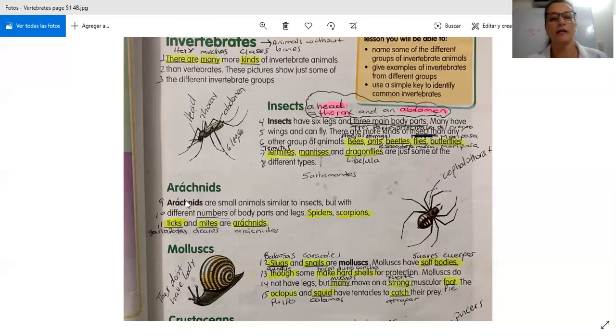Arachnids. Arachnids are small animals similar to insects, but with different numbers of body parts and legs. Spiders, scorpions, ticks, and mites are arachnids. Los arachnids, amores, son unos animales pequeños similares a los insectos, pero con diferente número de partes del cuerpo y patas. Arañas, escorpiones, garrapatas.